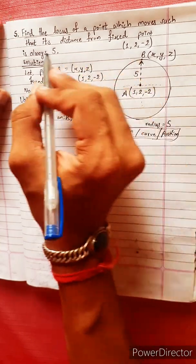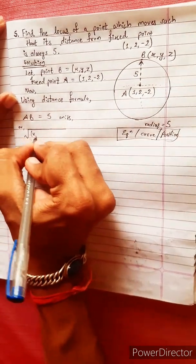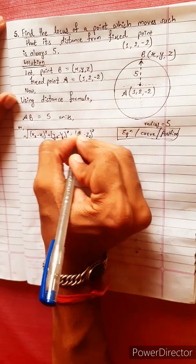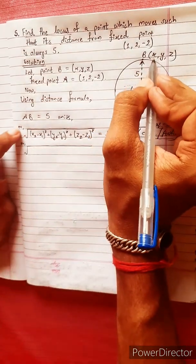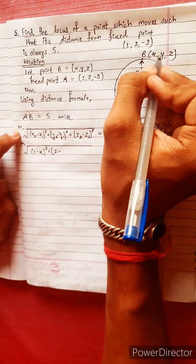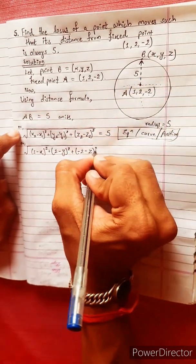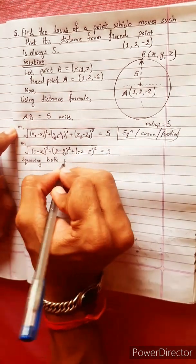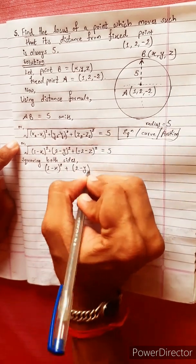If the distance from the fixed point is always 5, we apply the distance formula: the square root of (x2 - x1)² + (y2 - y1)² + (z2 - z1)² equals 5. Substituting the fixed point (1, 2, -2), we get the root of (1 - x)² + (2 - y)² plus the next term equals 5.